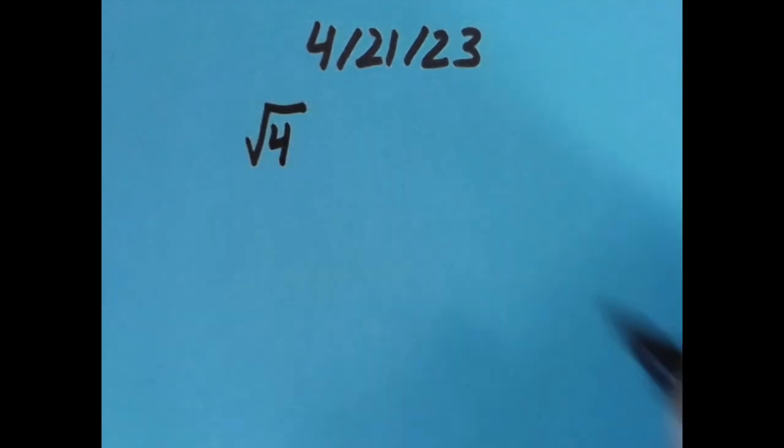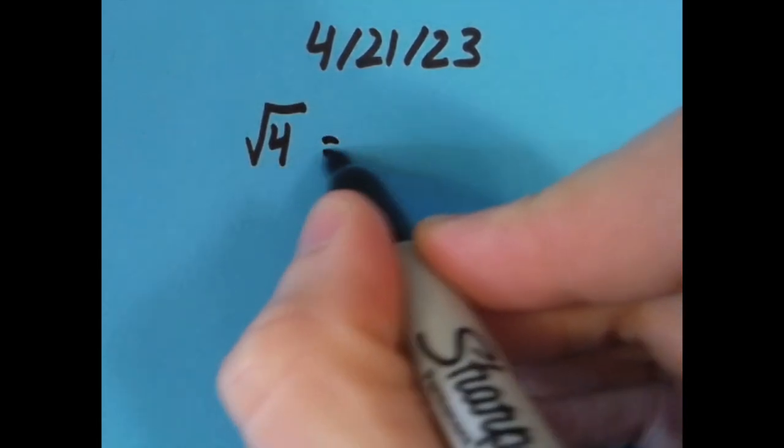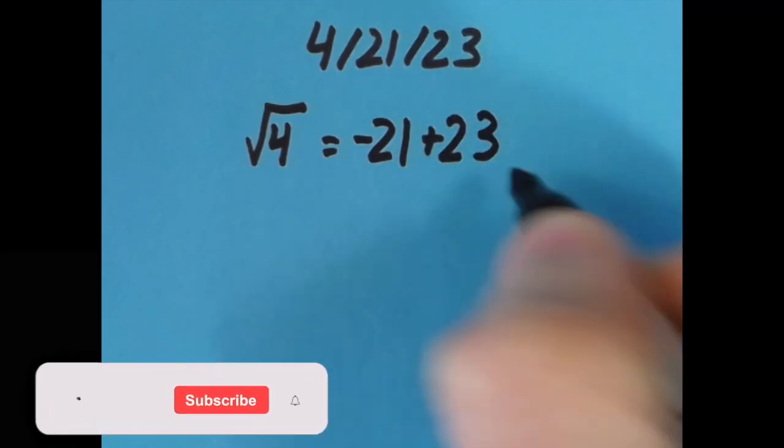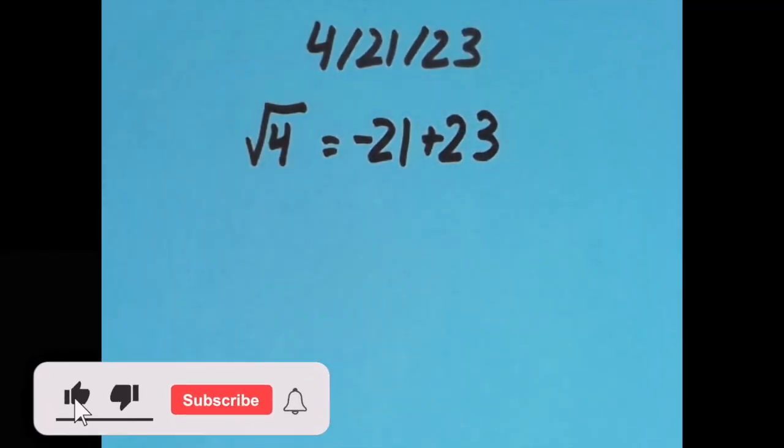I said that the square root of 4, now that's going to be 2, is equal to negative 21 plus 23. That's also positive 2. And that's what I did.